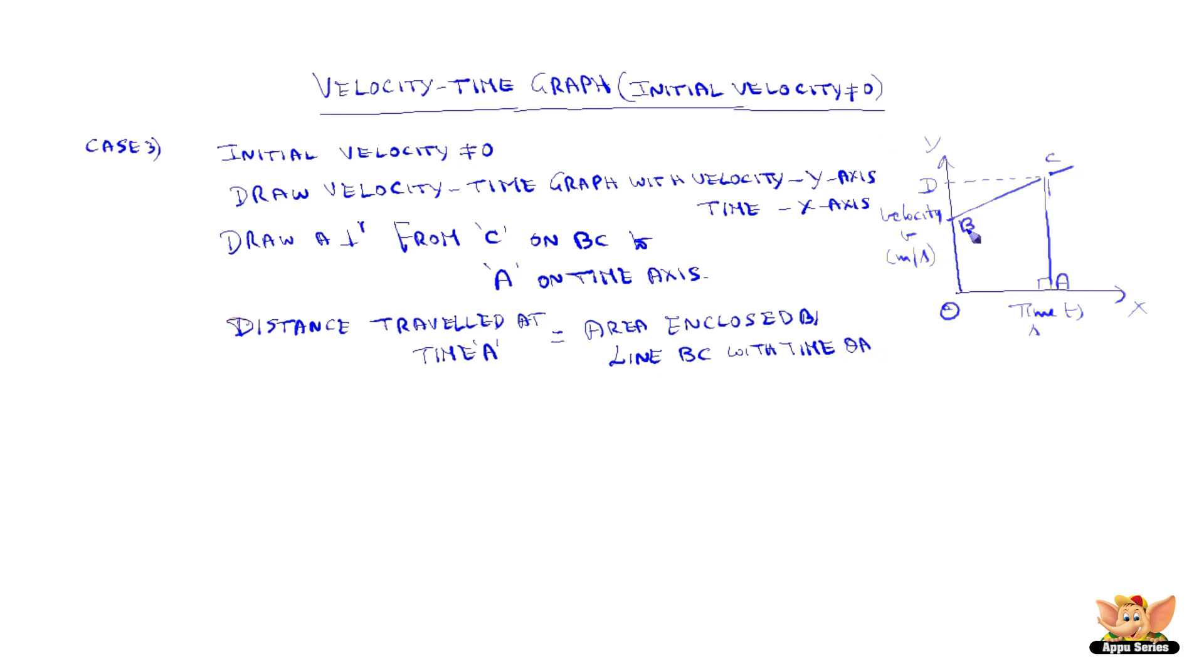This point being B. So from the velocity time graph we know that the area enclosed by the graph BC with the time OA is distance travelled at time A.